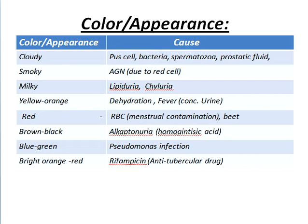Smoky colour is caused by acute glomerulonephritis, due to red cells. In acute glomerulonephritis, plenty of red cells are found in urine. Milky colour is next.